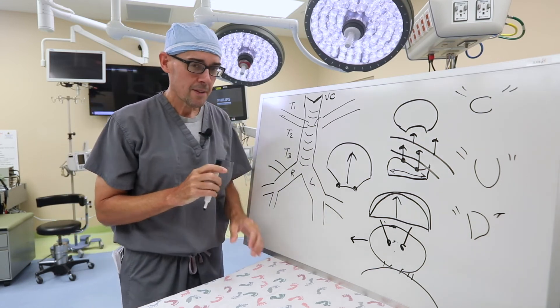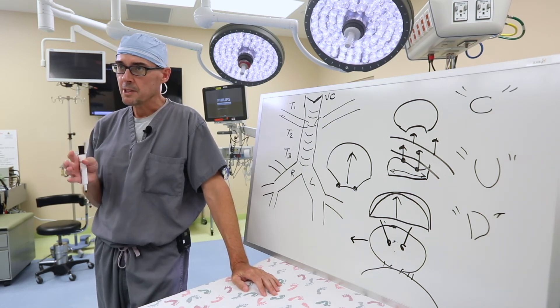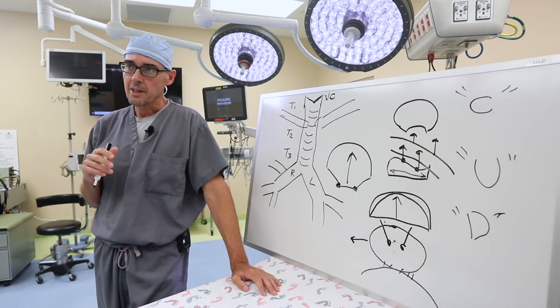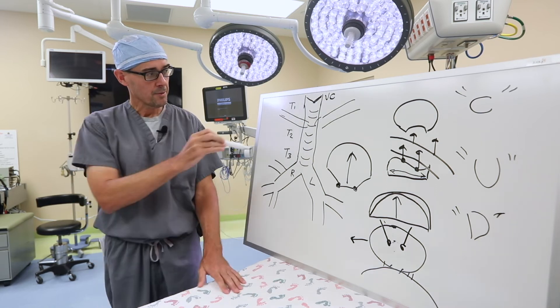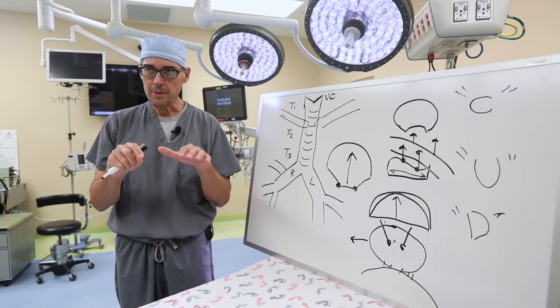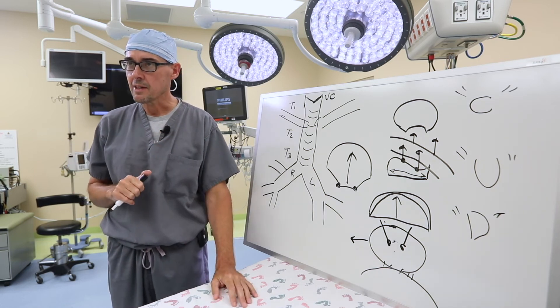At the end of the day, for each type of tracheomalacia for each patient, you have to customize a solution that works for their particular anatomy. And that can involve different parts of the trachea, moving it towards the back or towards the front in order to open that up and prevent that collapse.